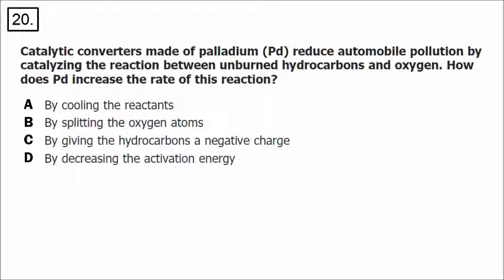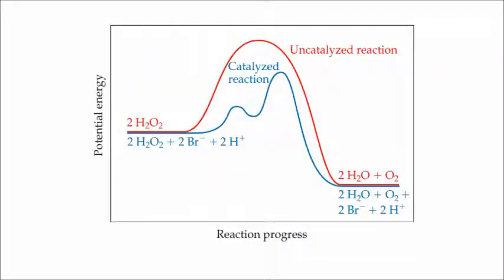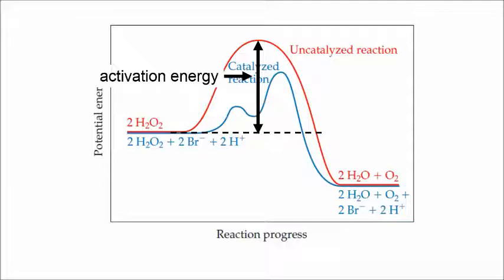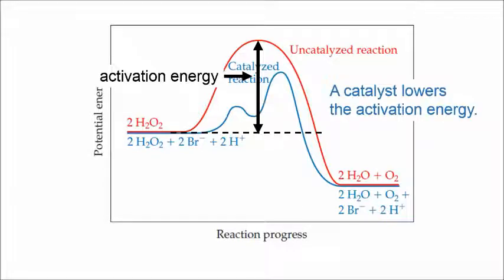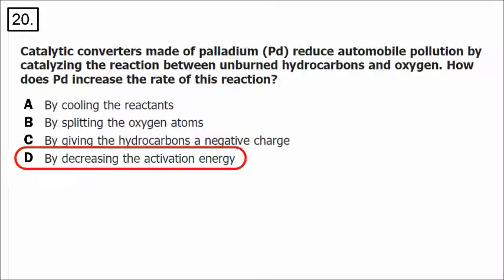Number 20 has to do with what a catalyst does. A catalyst speeds up a reaction. In the diagram, a red line shows the uncatalyzed reaction path from reactants to products. A blue line starts and finishes at the same level but takes a lower pathway — that's the catalyzed reaction. The energy barrier from reactants to products is called the activation energy. The catalyzed reaction has a lower activation energy than the uncatalyzed reaction. A catalyst lowers the activation energy. The correct answer is D.